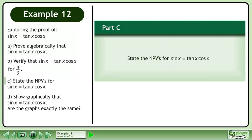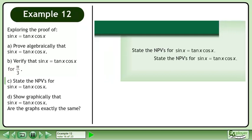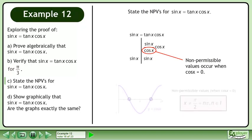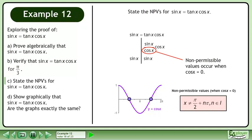In Part C, state the non-permissible values for sin x equals tan x times cos x. Bring up the proof we completed in Part A. Non-permissible values occur when cos x equals 0. Cos x equals 0 at π over 2 plus n π, where n belongs to the set of integers.